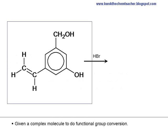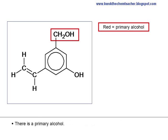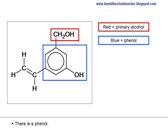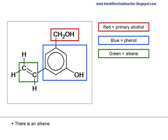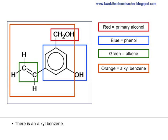Given a complex molecule to do functional group conversion, first identify the types of functional groups on the molecule. There is a primary alcohol, there is a phenol, there is an alkene, and there is an alkyl benzene.